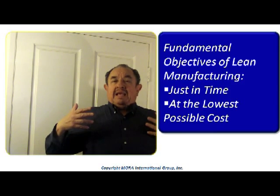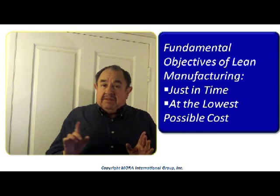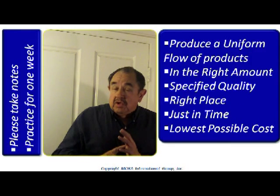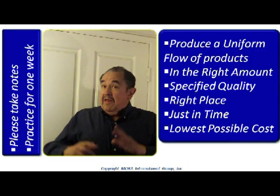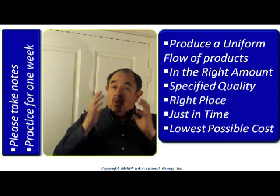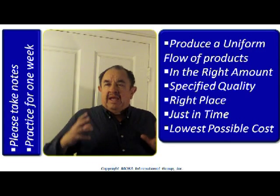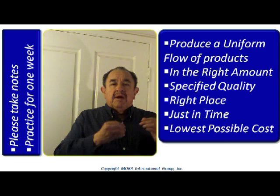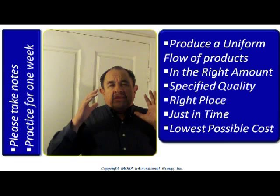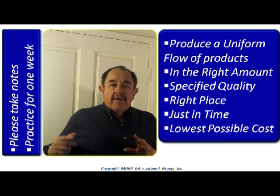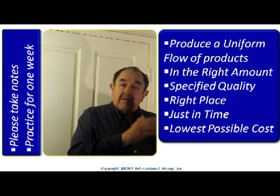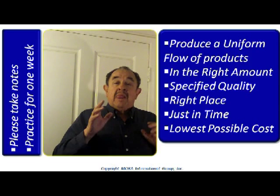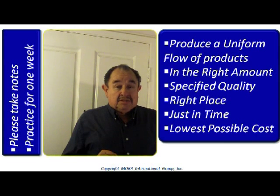I would like to ask you about one of your processes that may not be compliant with all these characteristics. Remember: number one is uniform flow; number two, the appropriate quantity — the quantity that we need; number three, deliver it with a specified quality — whatever the customer has established; next, deliver it in the right place where they need it, wherever you are committed to deliver; and finally, delivery must be done just in time and at the lowest possible cost.